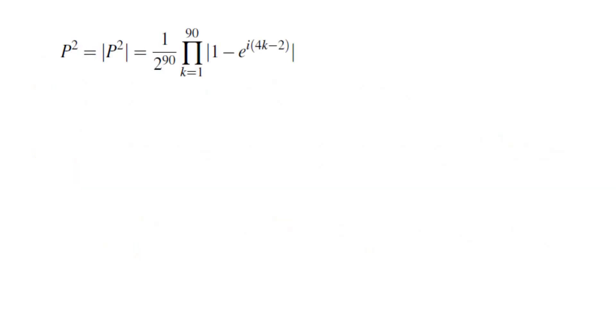This means if I take the absolute value of P², that would be the same as P². The advantage is that all the i's disappear and all the e^(-i(2k-1)) terms also disappear.